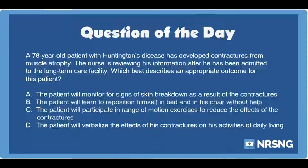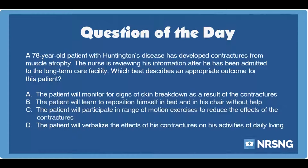The nursing category is neuro. The NCLEX category is basic care and comfort. A 78-year-old patient with Huntington's disease has developed contractures from muscle atrophy. The nurse is reviewing his information after he has been admitted to the long-term care facility. Which best describes an appropriate outcome for this patient?